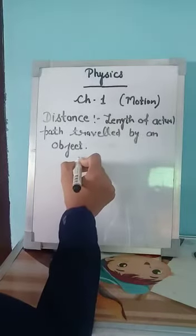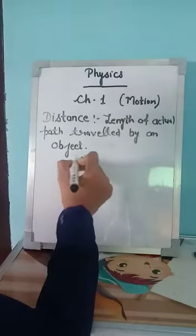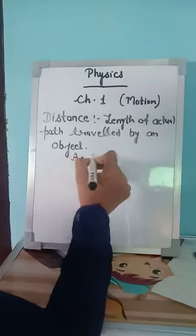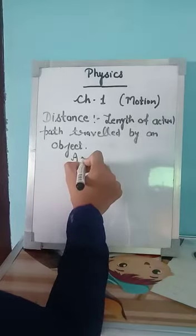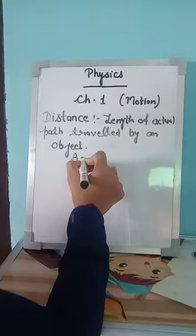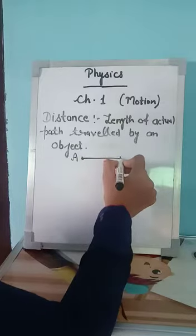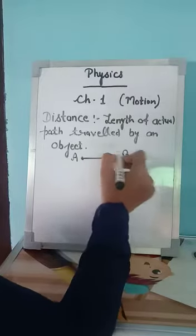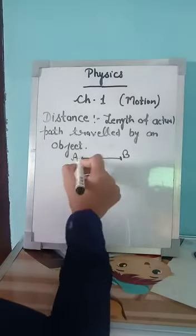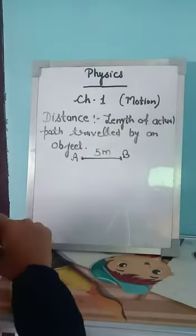For example, if there is a boy who is in this position, A is the initial position. Initially, he starts from A and goes to B. And let us consider the length between A and B is 5 meters. Clear?